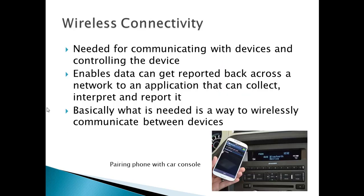The fourth layer is all about wireless connectivity needed to remotely communicate with or control the device, as well as report data to an application that can collect, interpret, and report it. This can be achieved through numerous wireless technologies. Connectivity is one of the more complex considerations in IoT, due to the number of available wireless technologies, each with different characteristics and pros and cons.